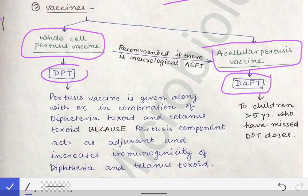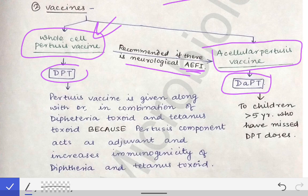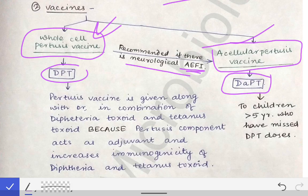Generally, the whole cell pertussis vaccine is used in the National Immunization Schedule 2020. However, if someone develops neurological adverse events following immunization (AEFI), we have to shift to the acellular pertussis vaccine, because the pertussis component is very much related to neurological complications after vaccination, even though it occurs in very few children.